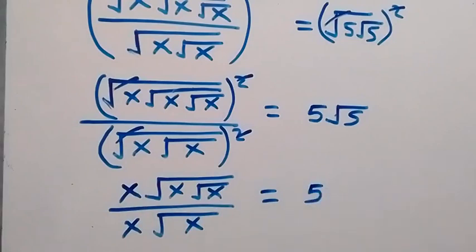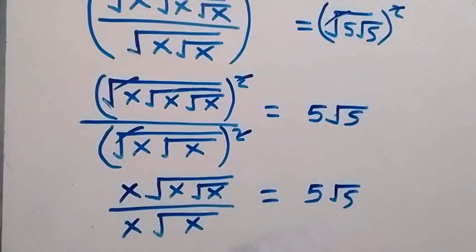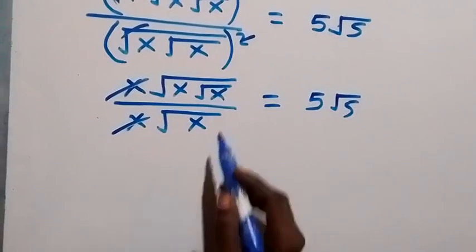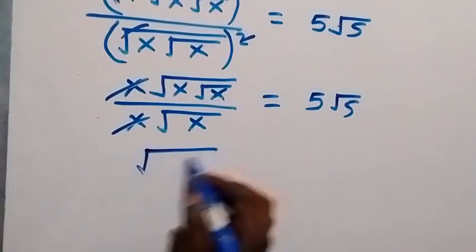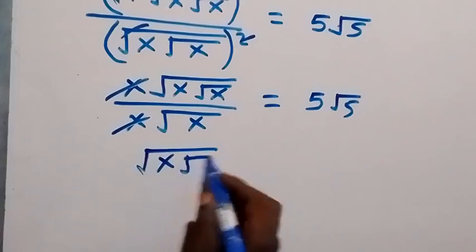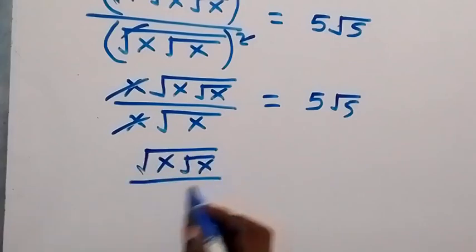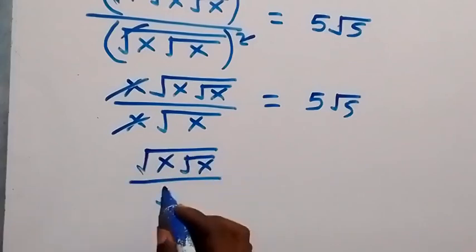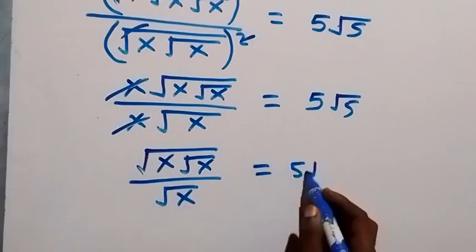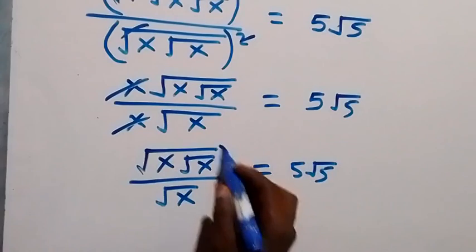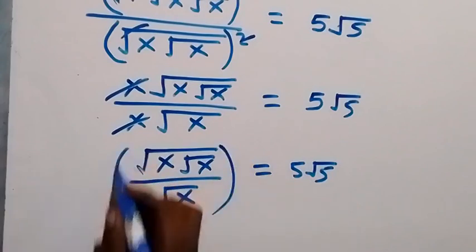From here, this x cancels each other, and what remains is nested root x over root x, which equals 5 root 5. Then let's square both sides again.